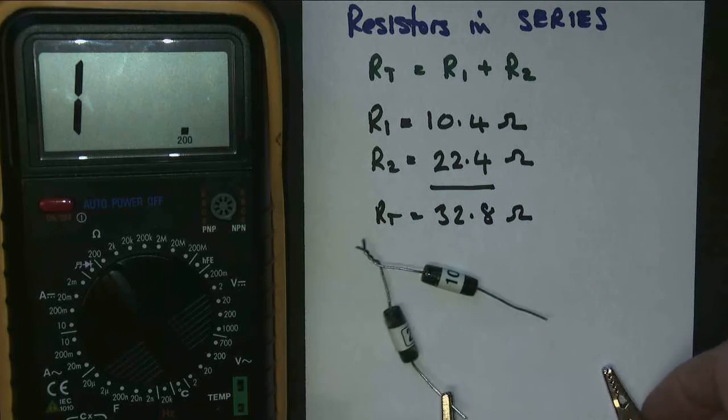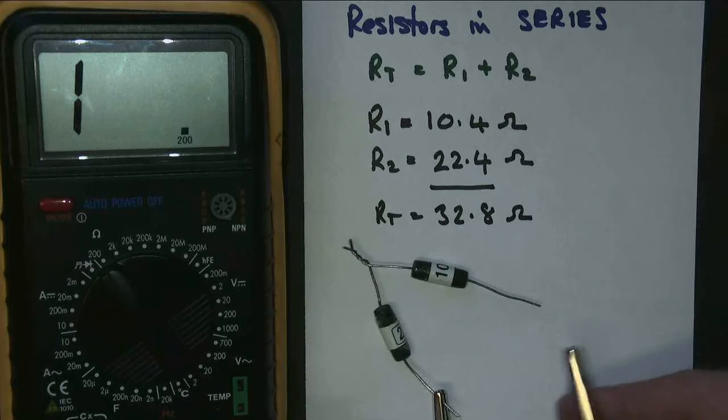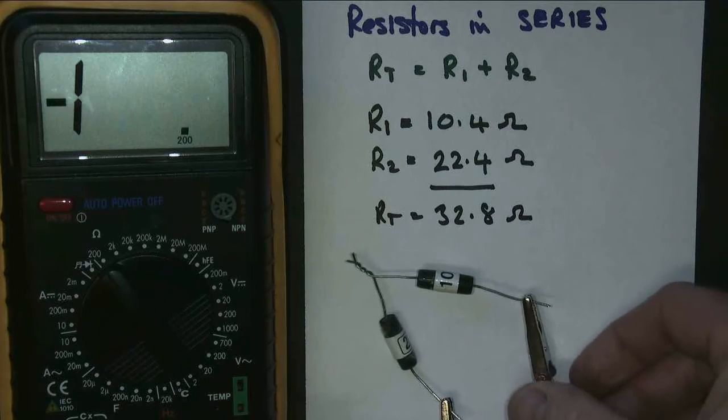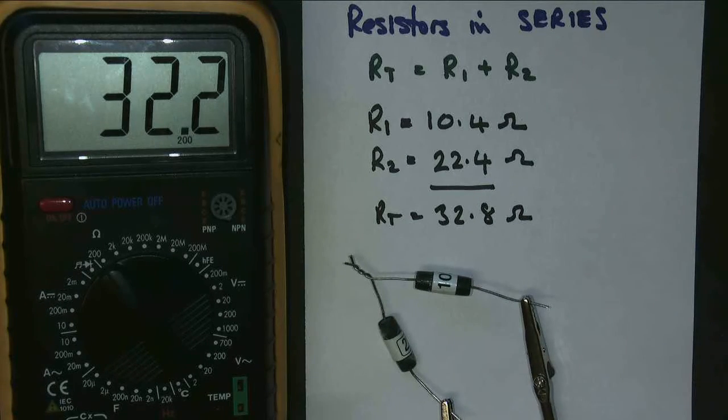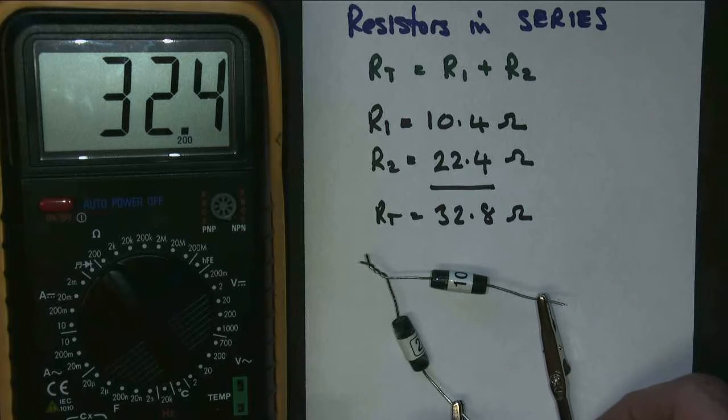So we've connected one. We'll connect the other one. We'll make sure we're a good connection. And... Not as close as I'd like, but it's not too bad. So that's 32.4 ohms. I imagine the stray resistance in the wires is adding a little bit there.